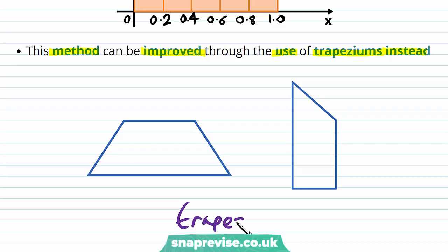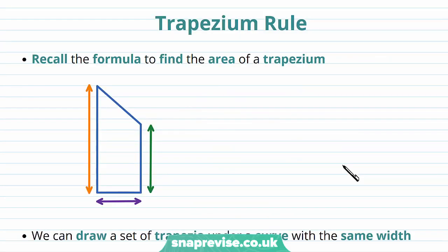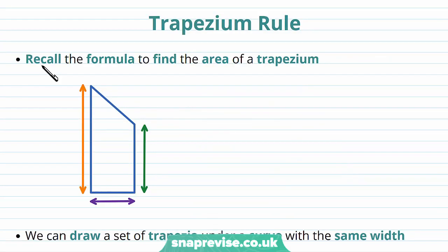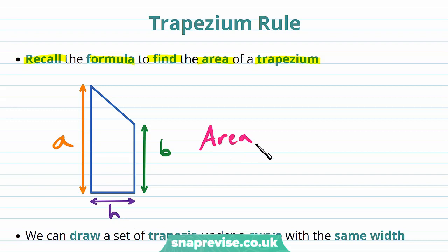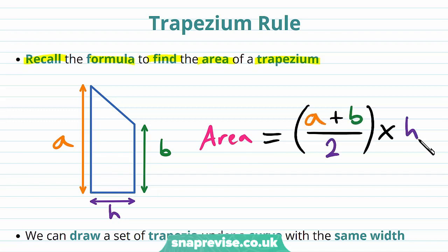These are trapezia, because they have a set of parallel sides. Recall the formula to find the area of a trapezium. Suppose we have the two parallel sides with lengths a and b, and a width of h. Then the area can be calculated by doing a plus b divided by 2, then multiplying by h. This h is the width of the trapezium.